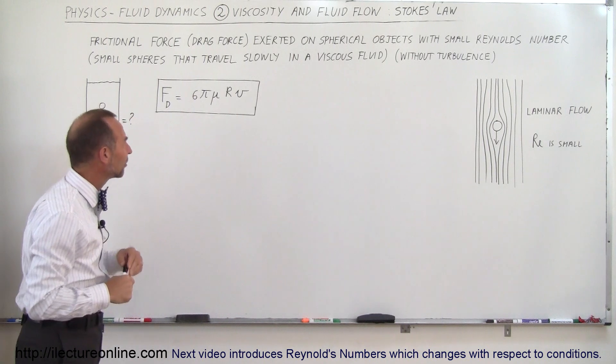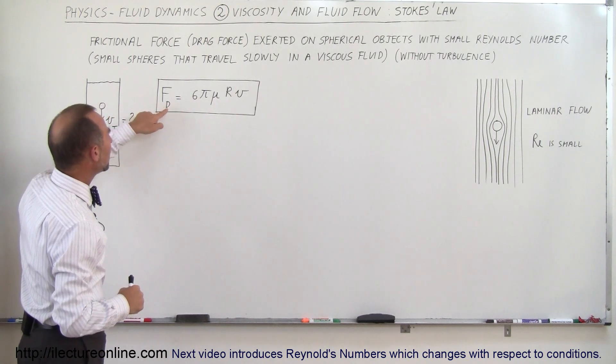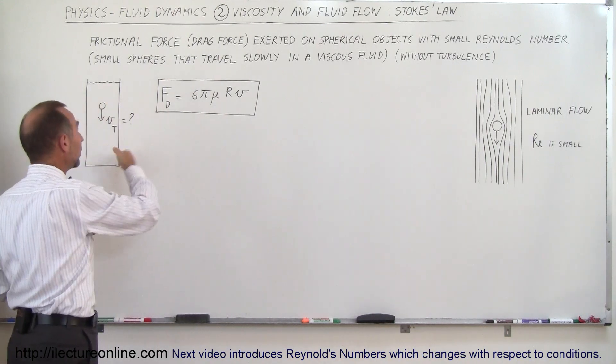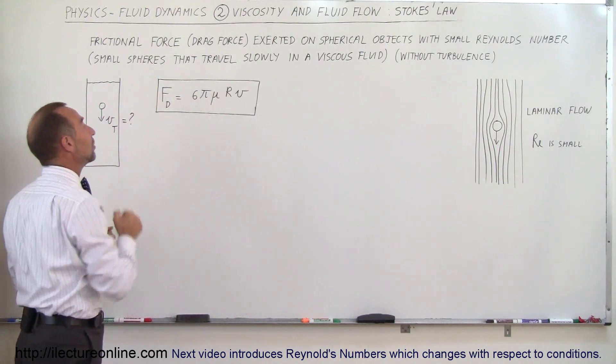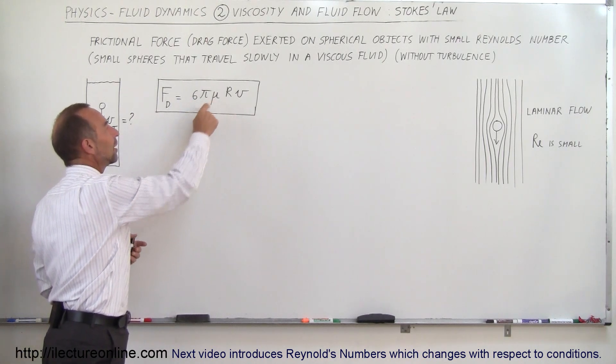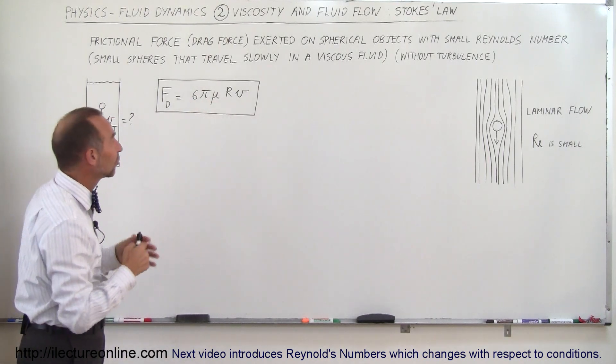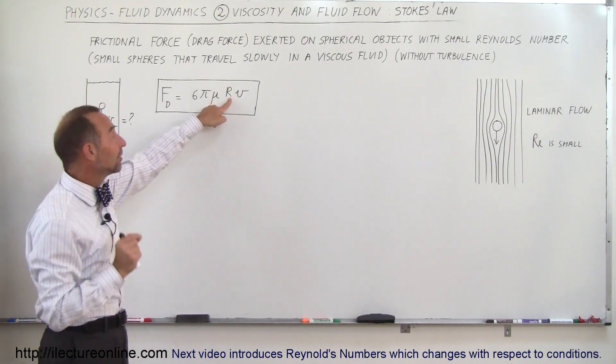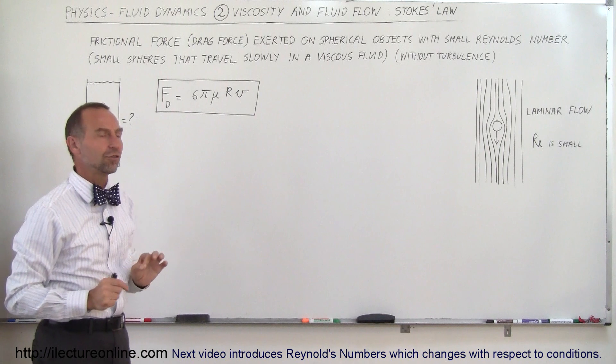So what we want to do here is take a look at this equation. This means the drag on the sphere as it's moving through the fluid can be written as the force of drag, Fd, equal to 6π times η, which is the coefficient of viscosity of the fluid, times the radius of the sphere, times the velocity of the sphere.